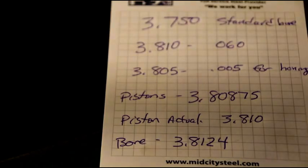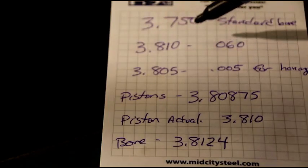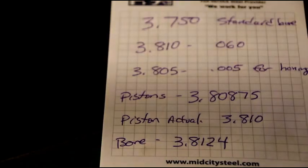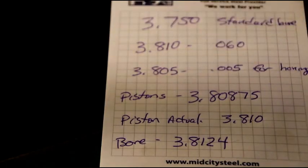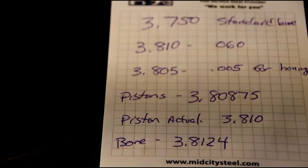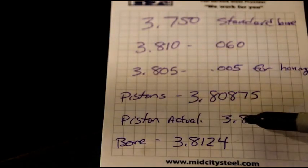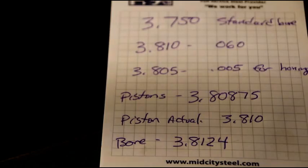We started out with Scott's engine. Standard bore on 258 is 3 inch 750. A 60 over bore is going to bring you to 3 inch 810, and that should be your final dimension. I bored this block, so it's 3.805 is what we're starting with right now. The pistons from Sealed Power are supposed to measure 3 inch 808 and 3 quarters. I took them out of the box. They weren't fitting. The finished bore should be 3 inch 810. That's standard. The pistons, when I took them out of the box, are 3 inch 810. That's the actual size of the piston. So my bore now has to be 3 inch 812 and 4 tenths.